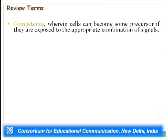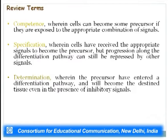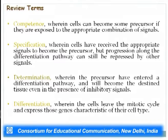To start, we review four stages by which pluripotent cells of the epiblast or blastula differentiate into precursor cells such as neuroblasts or muscle cells. First is competence, wherein cells can become a precursor if exposed to the appropriate combination of signals. Second is specification, wherein cells have received appropriate signals to become the precursor, but progression along the differentiation pathway can still be repressed by other signals. Third is determination, wherein the precursor has entered a differentiation pathway and will become the destined tissue even in the presence of inhibitory signals. Fourth is differentiation, wherein cells leave the mitotic cycle and express genes characteristic of their cell type.